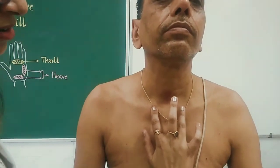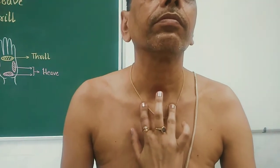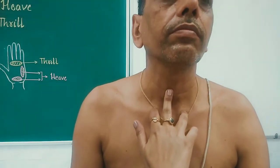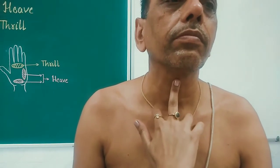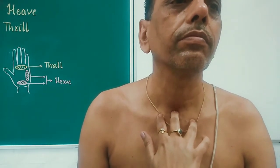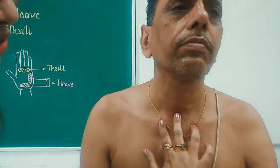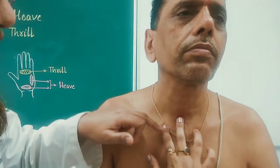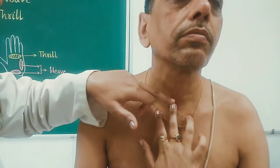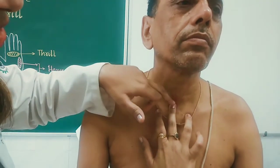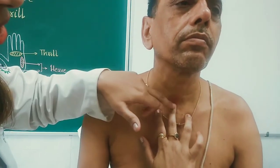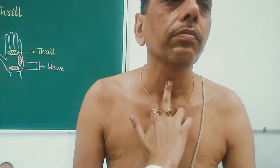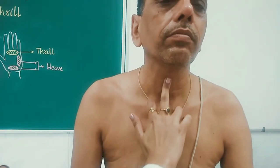Place your index finger and ring finger over the sternoclavicular joint, and with the middle finger trace the trachea. You have to see the distance between the middle finger and index finger, and the distance between the middle finger and ring finger. If these two distances are equal, the trachea is central in position.